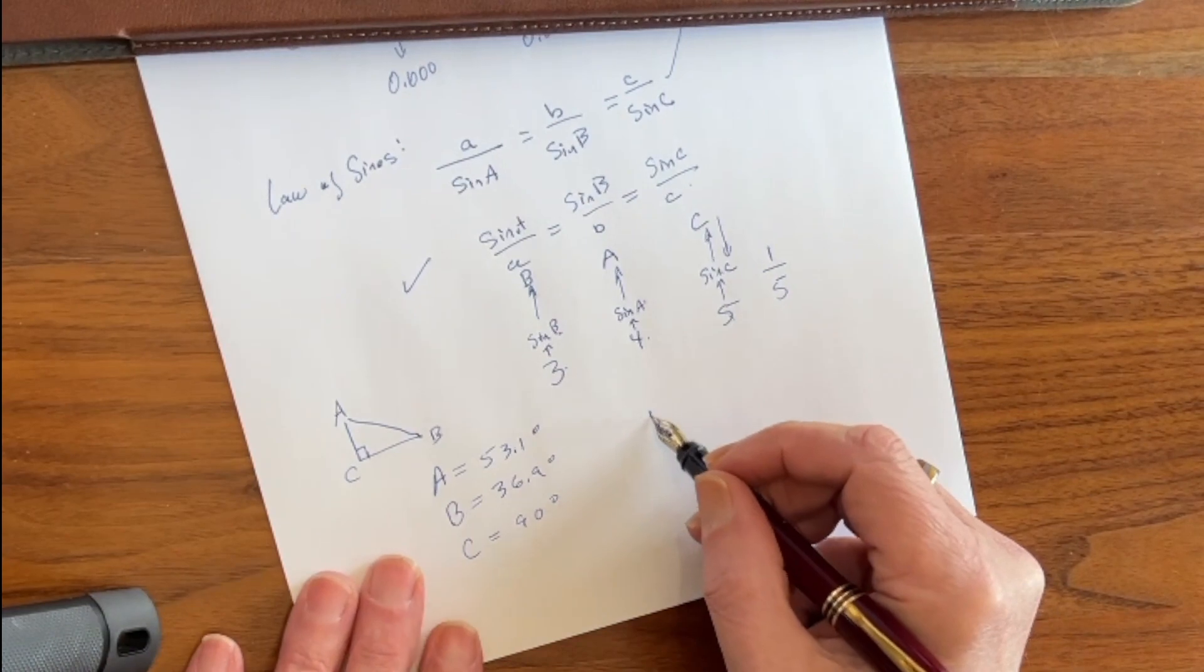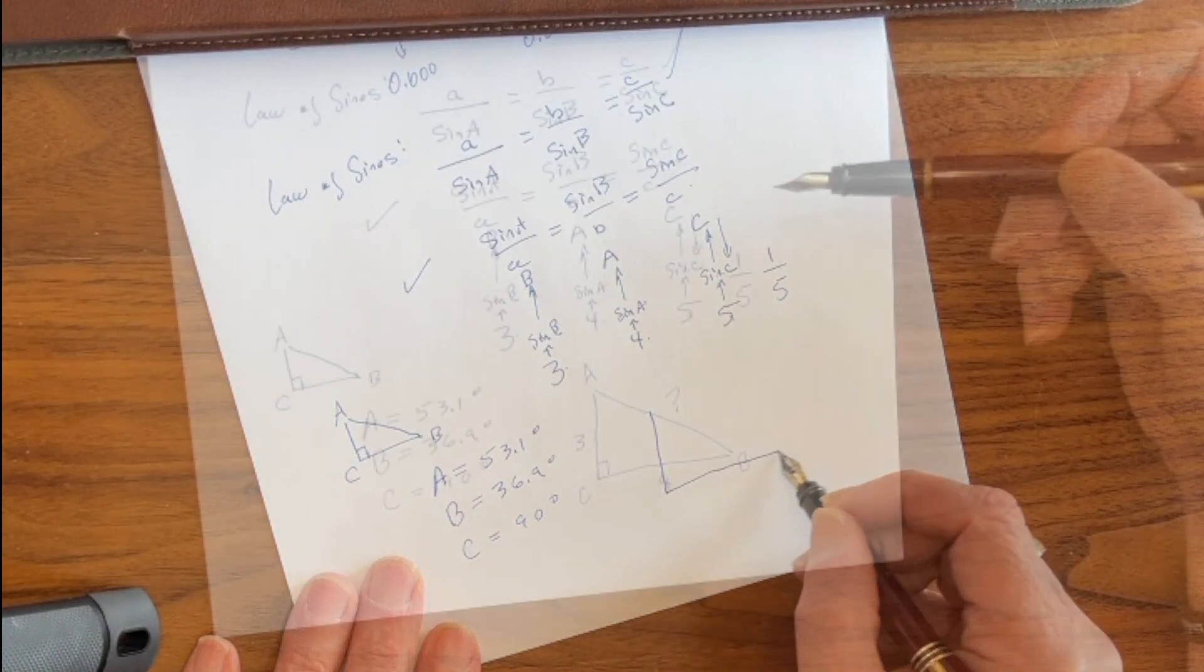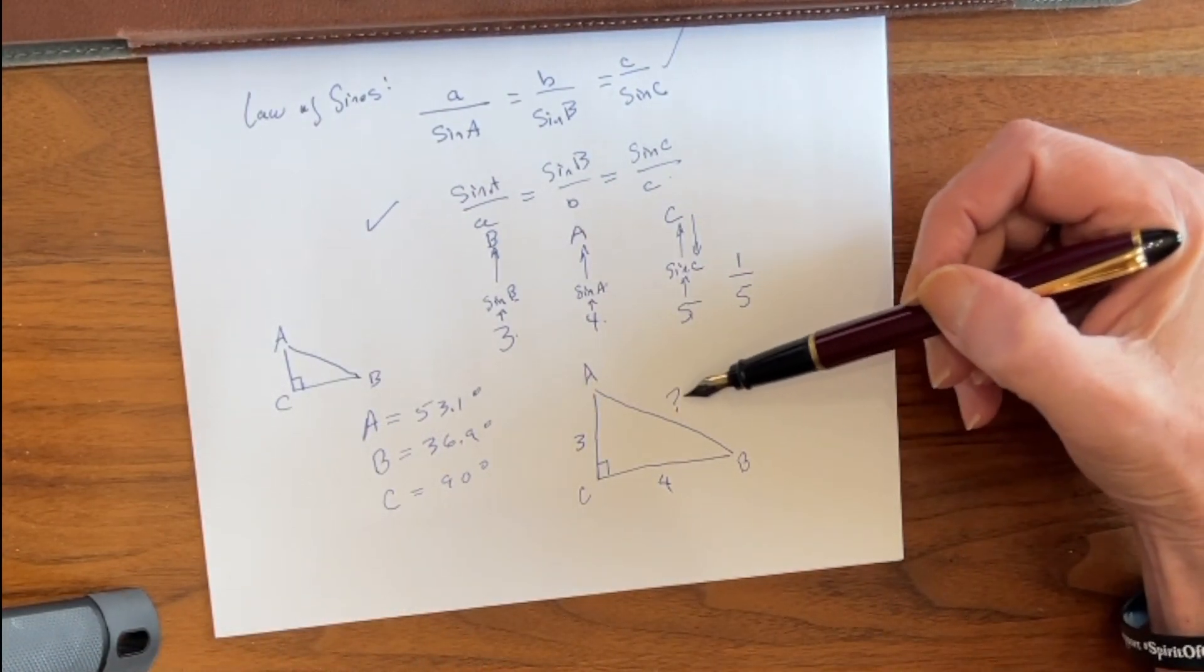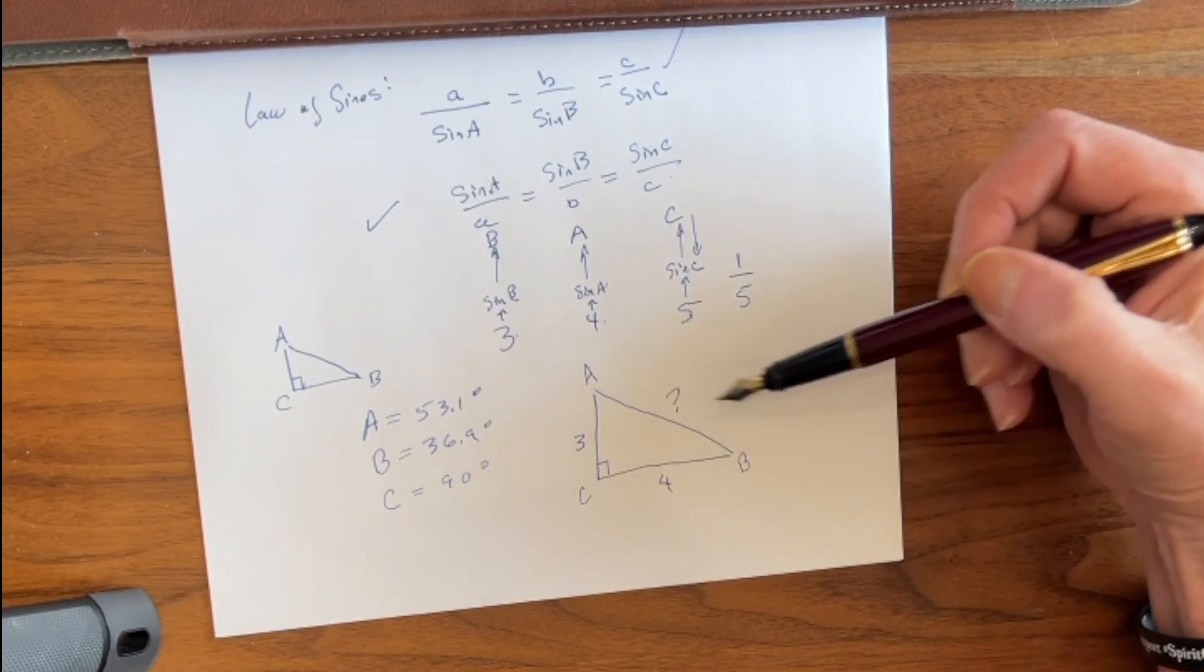But what happens if we have a triangle like this? How do we figure out what the length of side C would be, the side opposite the 90 degree angle? Now that's actually a two-step process, and it's a little bit more complicated, so we'll go ahead and do that on the next video.